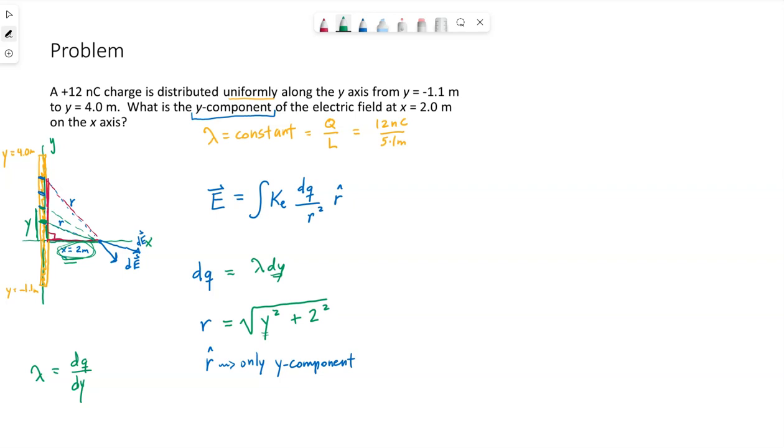R is in terms of y. R-hat. So r-hat has to do with the direction down here. Let me draw it separately. So if this is my dE, my vector, we have an x-component and a y-component.